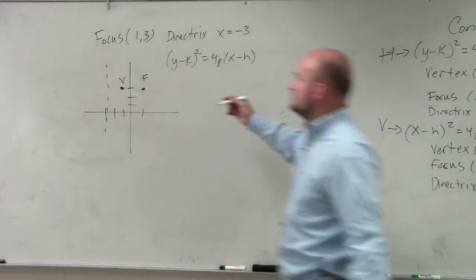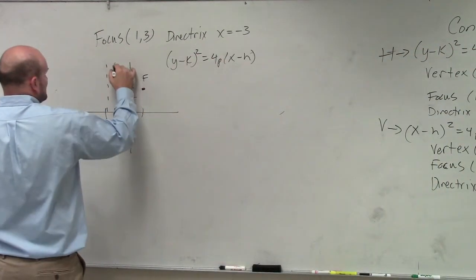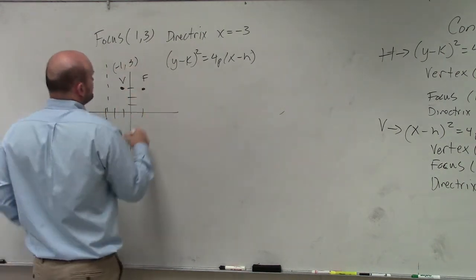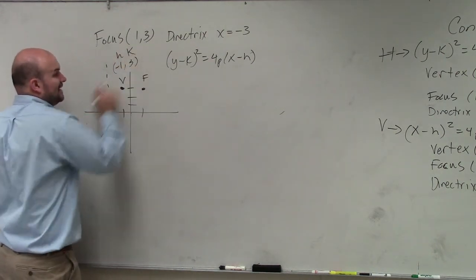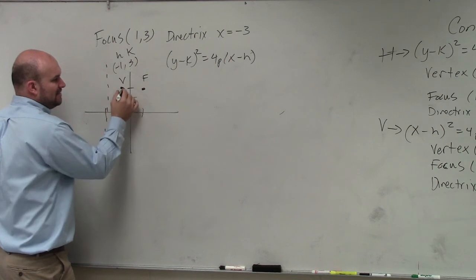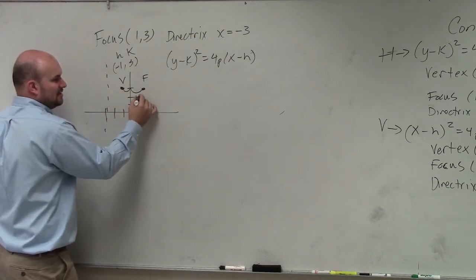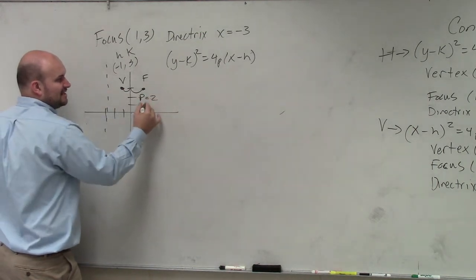Then my vertex, my H and my K. This is negative 1 comma 3. So that's my H and that's my K. And then my P is the distance from my vertex to my focus, which is 2. And it's going to the right, so it's positive.